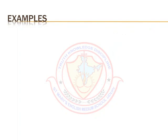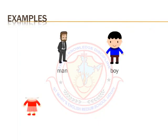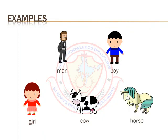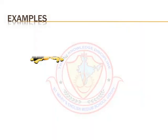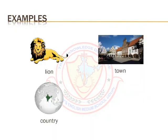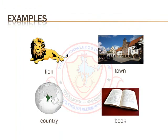Some examples of common nouns: man, boy, girl, cow, horse, lion, town, country, book, etc.